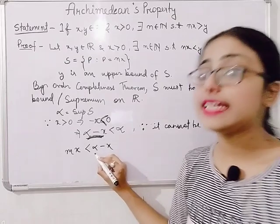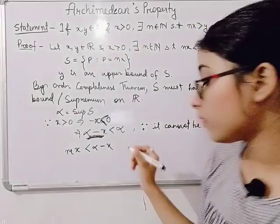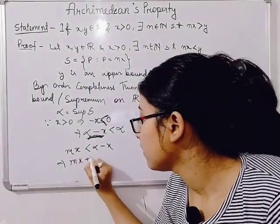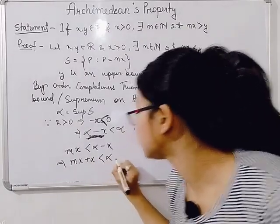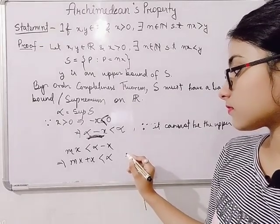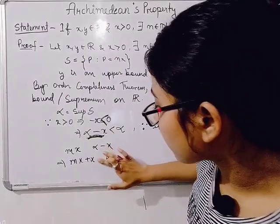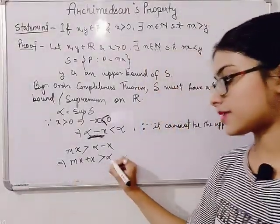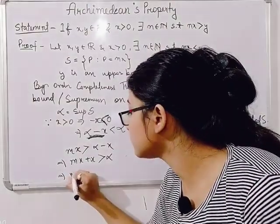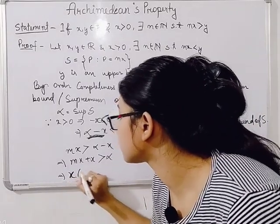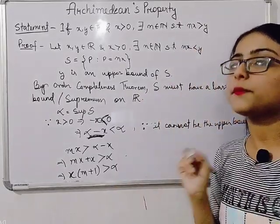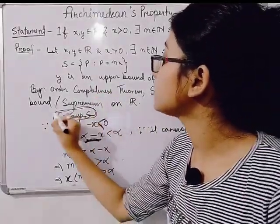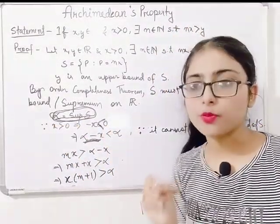Now, you can see here the inequality. So we will add x to both sides. This gives us mx plus x is greater than alpha. Now, what do we get? We get that x into (m plus 1) is greater than alpha. But this is a contradiction. You ask me why — because we have taken that alpha is equal to the supremum of S.